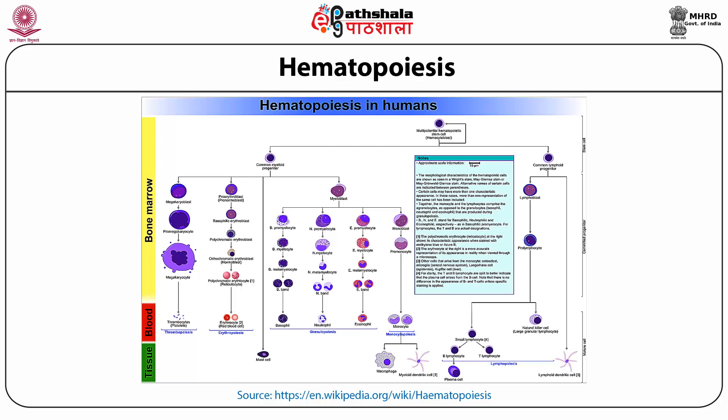The common lymphoid progenitor gives rise to lymphoblast, which gives rise to pro-lymphocytes, which then differentiate into natural killer cells, B lymphocytes, and T lymphocytes. B lymphocytes upon activation give rise to plasma cells. This is how the process of hematopoiesis takes place in the bone marrow.